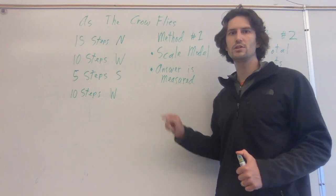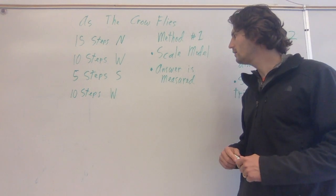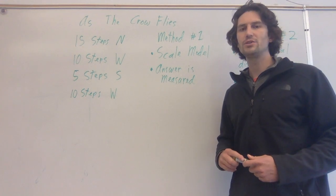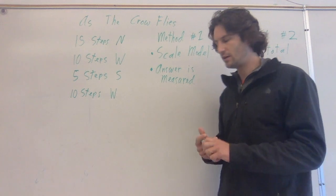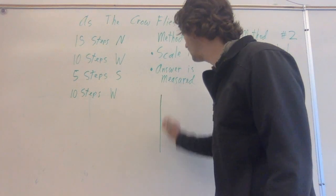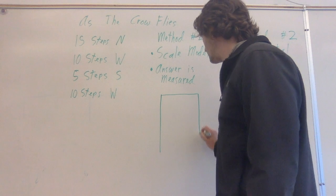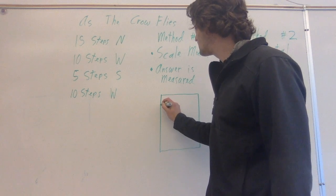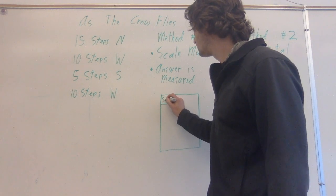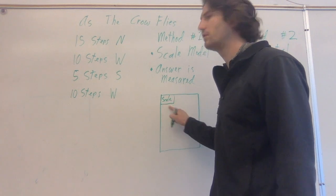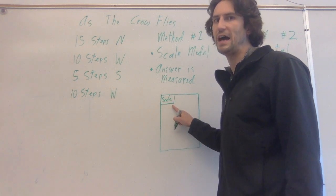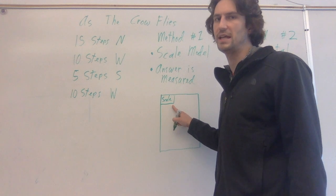The first way is with a scale model and then an answer that is measured. In this scenario, you're going to take a piece of graph paper, and it needs to be a piece of graph paper. You will have some type of a scale. You're going to write something like one box equals five steps or one box equals ten steps, some type of a scaling factor.